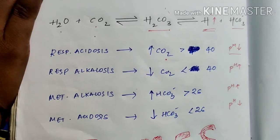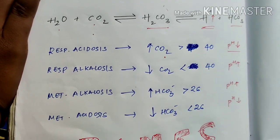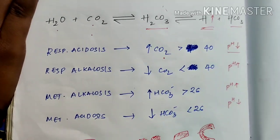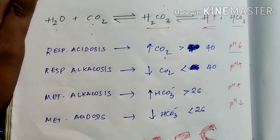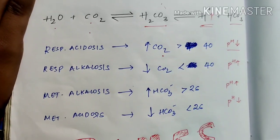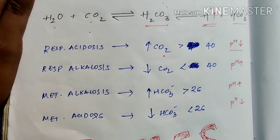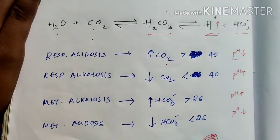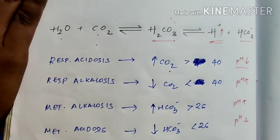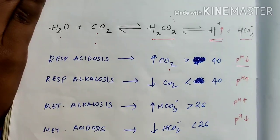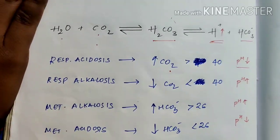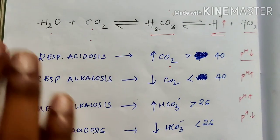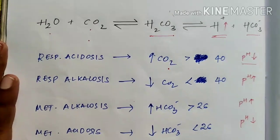To recap: in metabolic alkalosis, increased HCO3 minus reduces available H plus, so pH increases. In metabolic acidosis, reduced HCO3 minus increases available H plus, so the solution is acidic and pH is low. I understand the concept, but after reading many topics you can't remember all this.